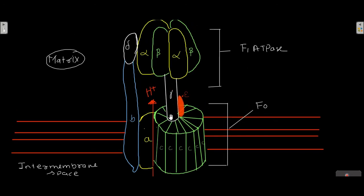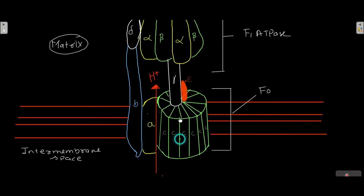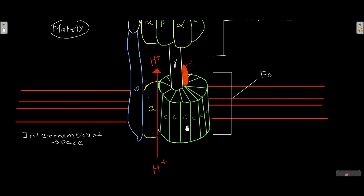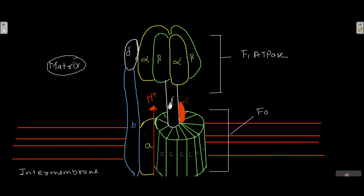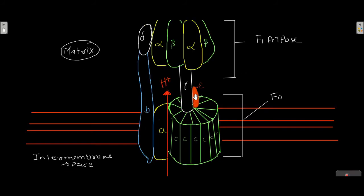The gamma subunit fits inside the F1 ATPase, which is made up of three alpha subunits and three beta subunits. The F1 ATPase — composed of three beta and three alpha subunits — does not rotate; it is fixed to the membrane. The movement of protons through the C subunit disk causes rotation of the gamma subunit within the fixed F1 complex.